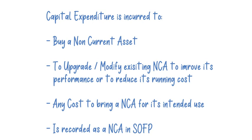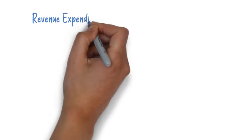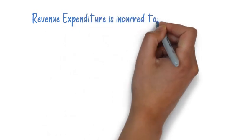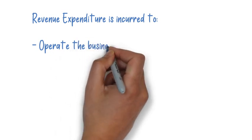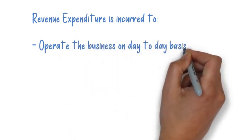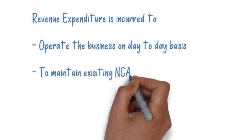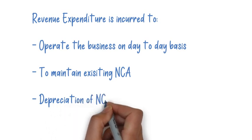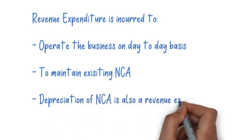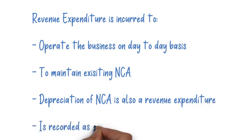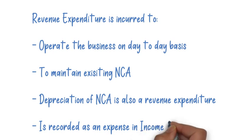Revenue expenditure is any expenditure incurred to operate the business on a day-to-day basis — day-to-day running expenses such as rent and electricity. Any expenditure to maintain an existing asset, for example servicing or tuning a motor vehicle, is a revenue expenditure. Expenses such as depreciation of the motor vehicle are charged in the income statement, unlike capital expenditure which is recorded in the statement of financial position.